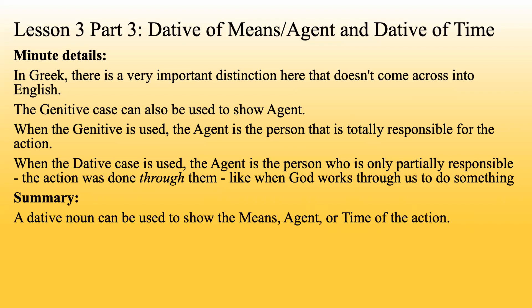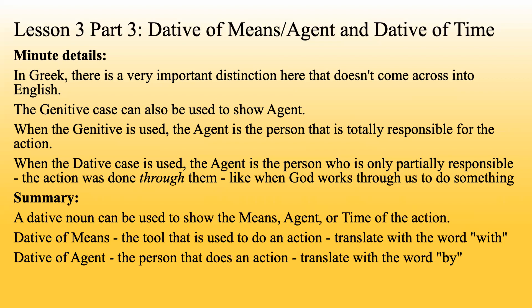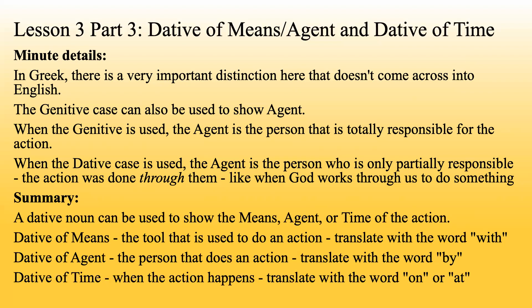Summary: a dative noun can be used to show means, agent, or time of the action. Dative of means is the tool used to do the action — translate with the word 'with.' Dative of agent is the person that does the action — translate with the word 'by.' And dative of time is when the action happens — translate with the word 'on' or 'at.'